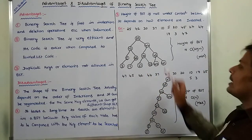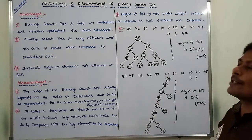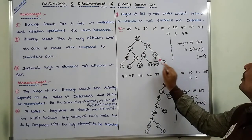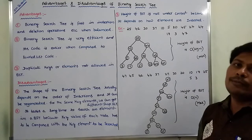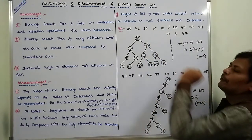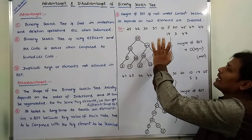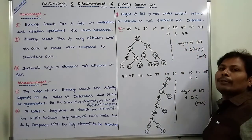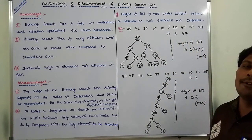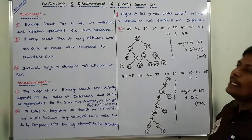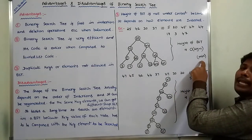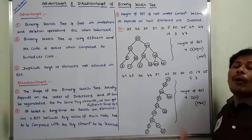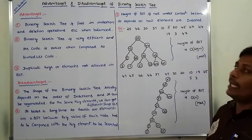Now, what is the height of the binary search tree? Level 1, level 2, level 3, level 4 — so height is 4. Simply, we can say the height of the binary search tree is O(log n). This is the minimum height of the binary search tree: O(log n).